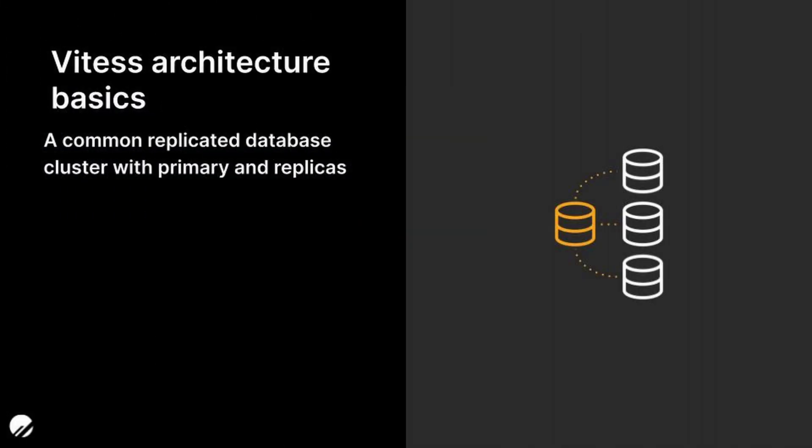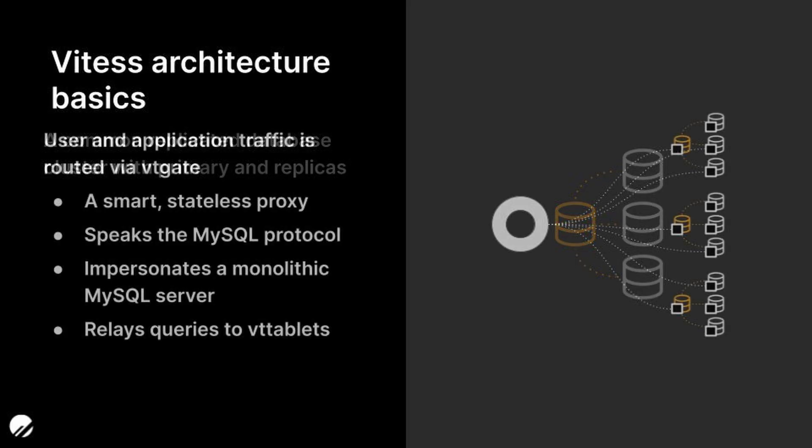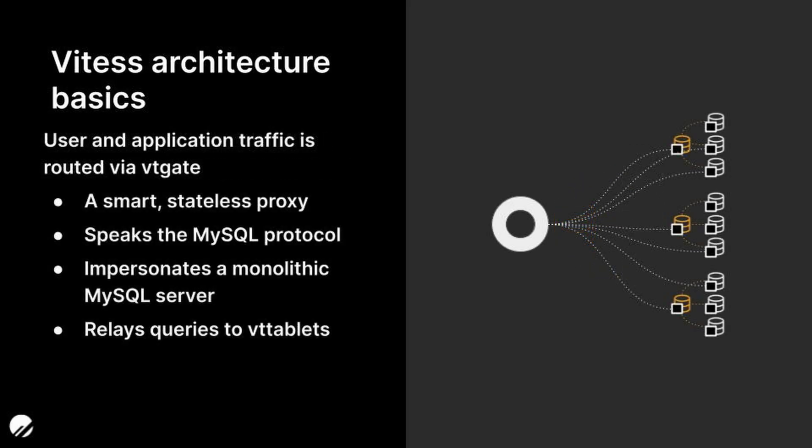In order to fully understand database branching, it's worth covering some basics of Vitesse. Vitesse is the open source project that PlanetScale is essentially built on top of. It is a MySQL-compatible platform originally designed by a team at YouTube in the early 2010s to handle scaling issues with a traditional MySQL environment. Every single database in Vitesse is actually a cluster with one primary and one or more replicas. In front of these clusters is a smart stateless proxy known as VTGate that routes requests to the different clusters within an individual Vitesse environment.